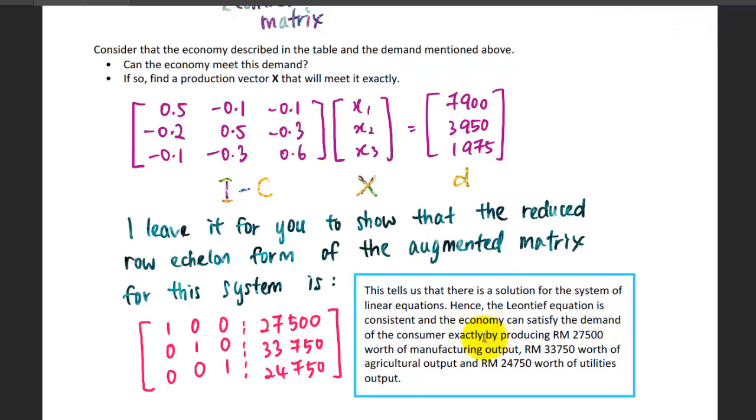But how much production? You have to produce 27,500 ringgit Malaysia worth of manufacturing output, and so on for the other two sectors. So the production matrix X would be these three figures.